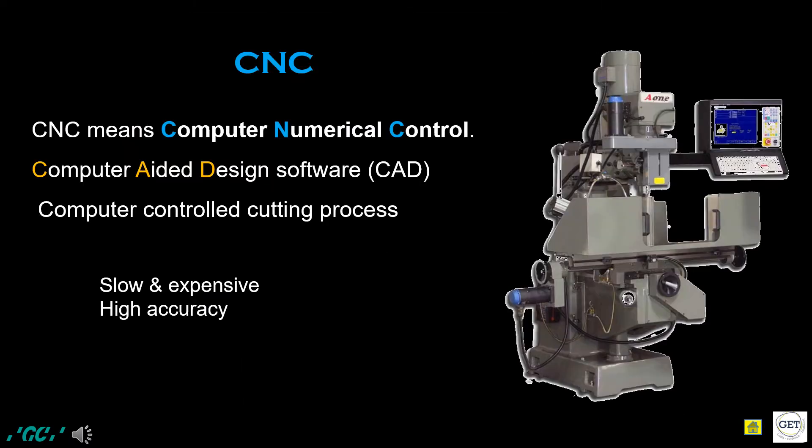CNC — Computer Numerical Control Cutting — is a different procedure in which brackets are cut out of raw material. The process is slower than MIM but yields higher accuracy and quality of the brackets.